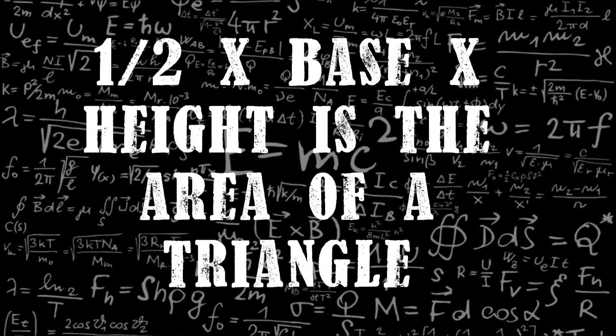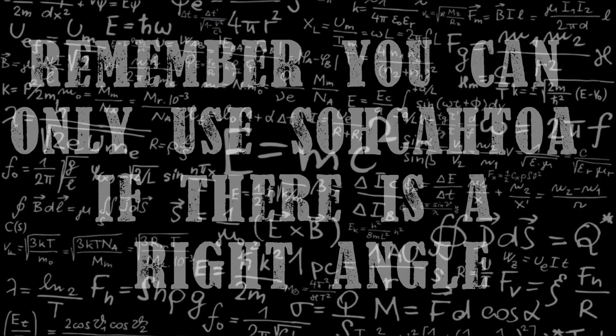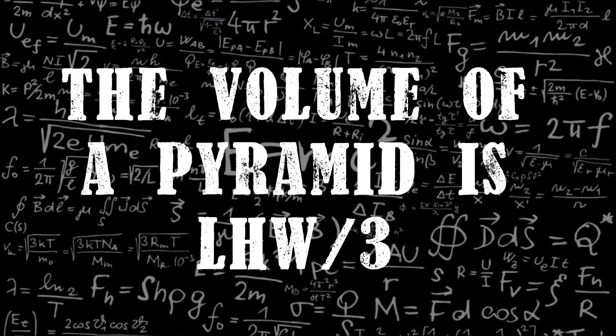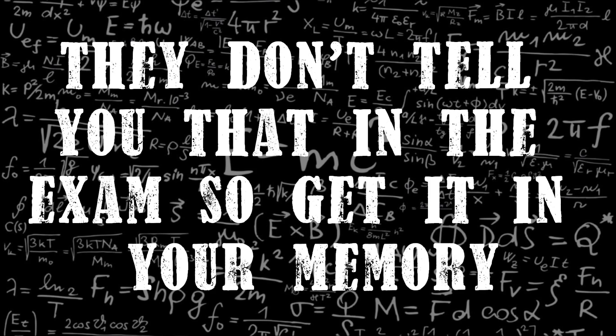Half times base times height is the area of a triangle. Remember you can only use SOHCAHTOA if there is a right angle. The volume of a pyramid is LHW over 3. Don't tell you that in the exam, just get it in your memory.